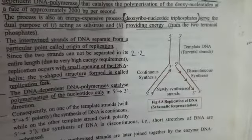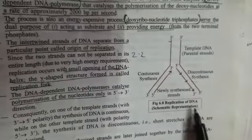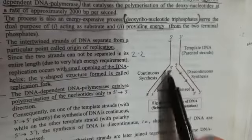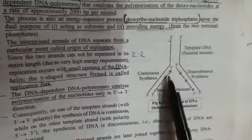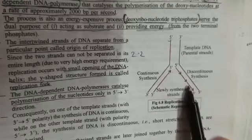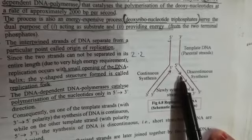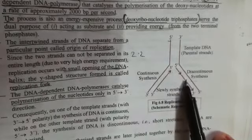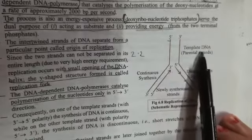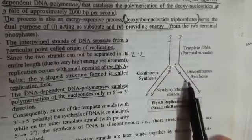The figure shows the replication of DNA as a schematic representation. When the DNA unwinds, it makes the replication fork, which is Y-shaped. These fragments, which we just discussed, are the Okazaki fragments. One strand is known as the template strand on which the formation of the replica occurs.